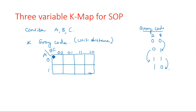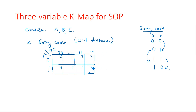So the full three-variable K-map cell numbering is: 000 is 0, 001 is 1, 011 is 3, 010 is 2, 100 is 4, 101 is 5, 111 is 7, 110 is 6. The ordering along the top is 0, 1, 3, 2 and down the side 4, 5, 7, 6 — note the change at positions 2, 3, 6, 7 due to gray code.